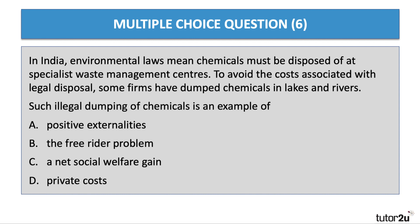Question 6: In India, environmental laws mean chemicals must be disposed of at specialist waste management centres. To avoid the costs, some firms have dumped chemicals in lakes and rivers. Such illegal dumping is an example of the free rider. In the UK, for example, the landfill tax led to many more people dumping industrial and household waste in fields to avoid the charge. People get away with it without imposing any cost on themselves, but clearly impose an external cost on society.